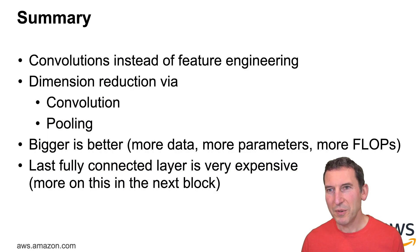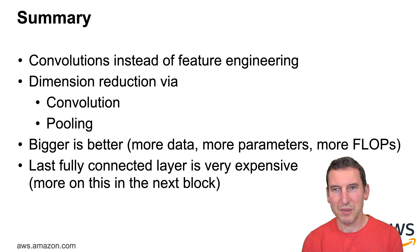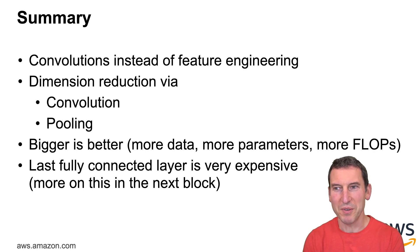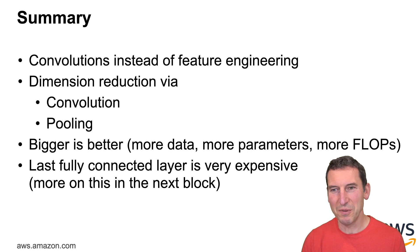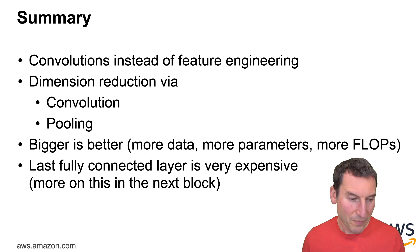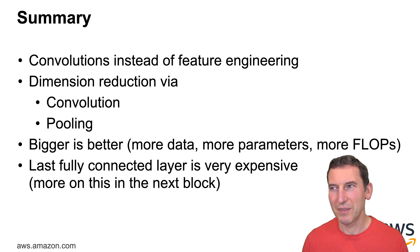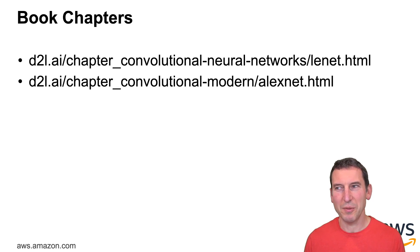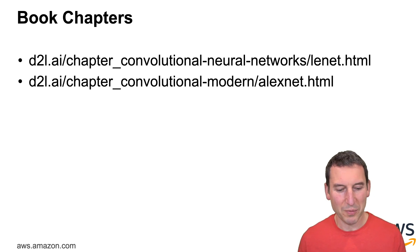To sum things up: convolutions are now being used instead of feature engineering, and you get dimensionality reductions through convolutions and pooling — but also bigger is better: more data, more parameters, more FLOPs really helps. The last fully connected layers are really expensive, and we'll discuss subsequently how to fix this, because it caused a lot of pain — some hardware designers even built specialized hardware to address it. Turns out you can fix it with math, and it's a lot more effective. There are a couple of book chapters on LeNet and AlexNet — go through those.